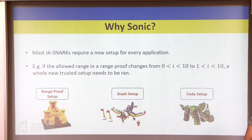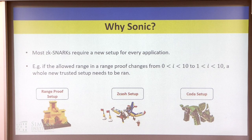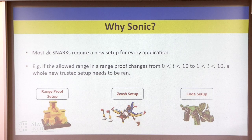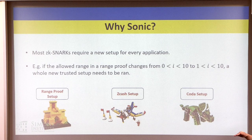In prior works, the way people would do this is an MPC for each individual application. You'd have one setup for range proofs, one for Zcash, one for Coda, and each company would have to run their own ceremony to get their own parameters. And what's more, if they got it wrong — say they accidentally forgot a minus sign somewhere in their code — they'd have to run the whole ceremony again, which is quite a practical concern because mistakes happen all the time.